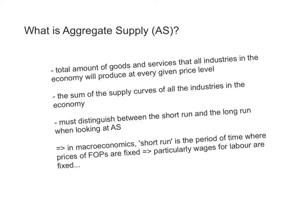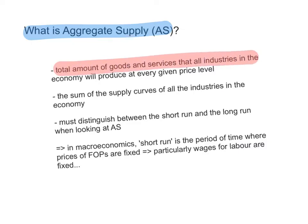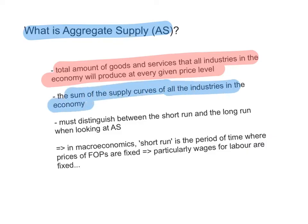What is aggregate supply? In the previous five videos of this series, I explained aggregate demand and the components of aggregate demand and the things that cause the aggregate demand curve to shift. Aggregate supply is the total amount of goods and services that all industries in the economy will produce at a given price level. It is essentially the sum of all the supply curves of all industries in the economy.